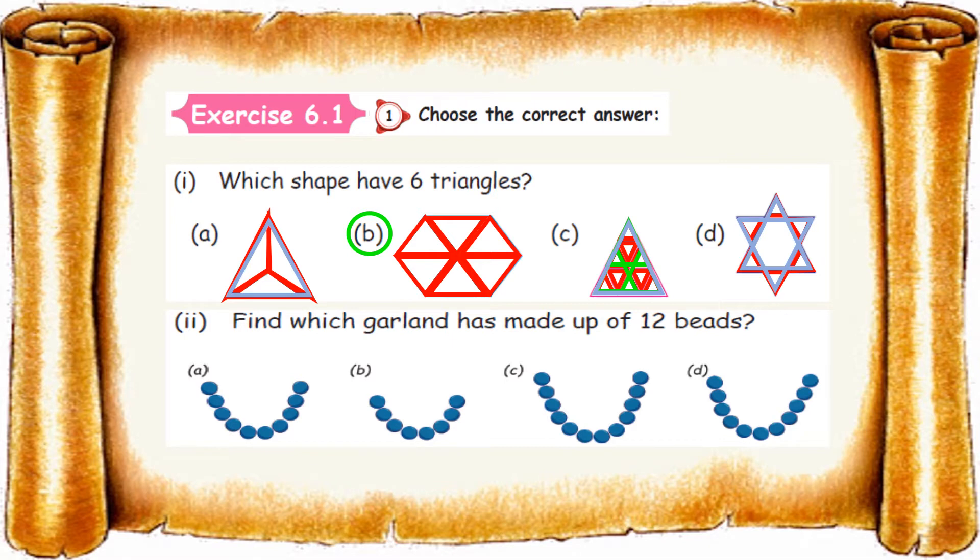Come to the second one. Find which garland has made up of 12 beads. 1, 2, 3, 4, 5, 6, 7, 8, 9, and 10. So the first one is made up of 10 beads only.